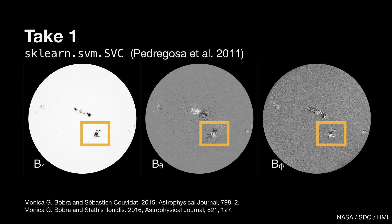We ended up with some pretty decent results. There are many ways to measure the performance of a model. Our accuracy was 0.92, which seems good. But for rare event prediction, a high accuracy can be misleading because you can get a very high accuracy just by predicting no all the time. So we also calculated a skill score called the TSS, which quantifies how much better you do than predicting no all the time. This skill score ranges from minus one to one, where minus one is the worst possible prediction, plus one means getting it right all the time, and zero is the same as guessing randomly. Our TSS for this study was 0.76.